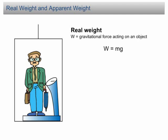Real weight is the gravitational force acting on an object. It is given by the equation W equal to mg.